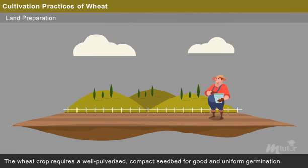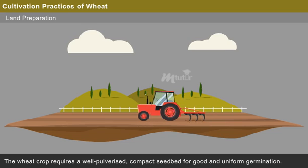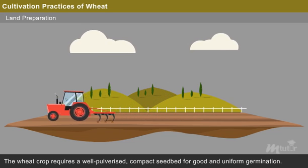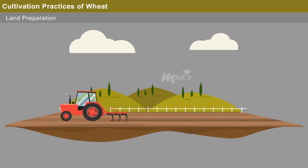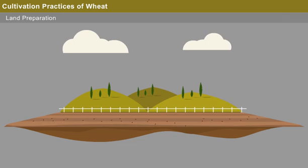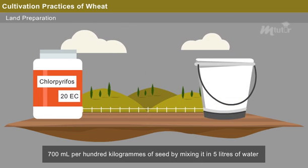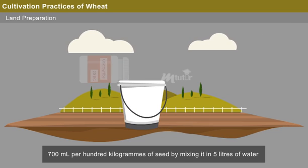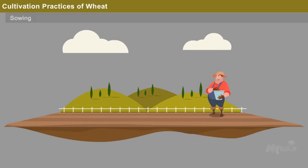Now let us discuss the cultivation practices of wheat. Land Preparation: The wheat crop requires a well-pulverized but compact seedbed for good and uniform germination. One deep ploughing with a soil-turning plough followed by two harrowings and planking is desirable. To protect the crop from termites, particularly in the rain-fed area, treatment with chlorpyrifos 20EC at 700 millilitres per 100 kilograms of seed, mixed in 5 litres of water and sprayed over the seed, is suggested.